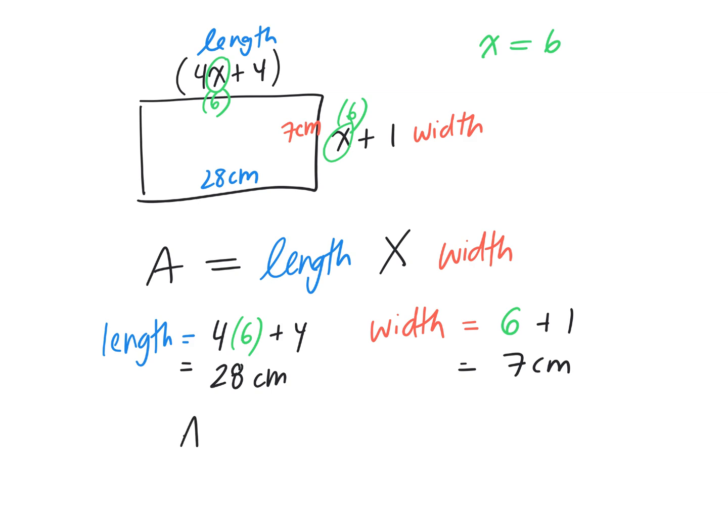Area is equal to length times width, so what am I multiplying together to get the actual area? 28 times 7 which is equal to what? 196 centimeters squared. Does that make sense?